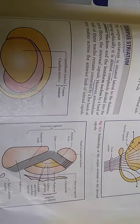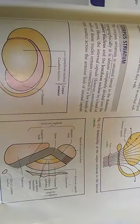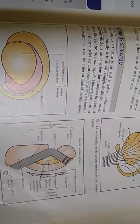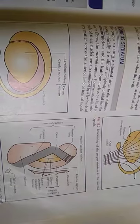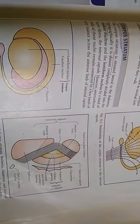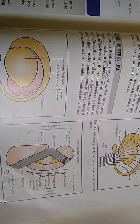Our today's topic of discussion is basal nuclei. So what are basal nuclei? Basically, these are large masses of grey matter situated within the white core of each cerebral hemisphere. They form essential constituents of the extrapyramidal system. It is more commonly regarded as basal ganglia, but basal ganglia is a misnomer. It should be correctly called basal nuclei.